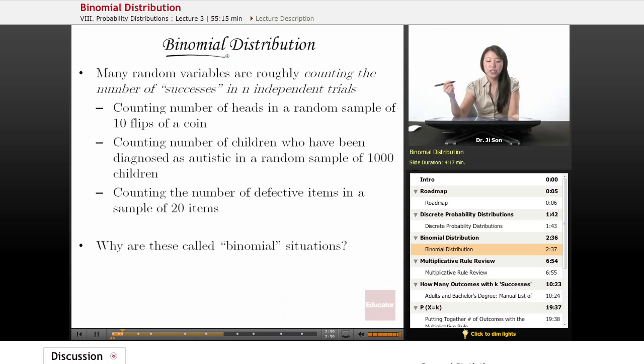Let's talk about this binomial distribution. Many random variables are really counting the number of successes in n independent trials. By successes, we don't necessarily mean that it has to be a winning trial. It just means whatever you're interested in, whatever outcome out of two outcomes you're interested in. A lot of times the random variable is counting how many times that interesting event happens in n number of trials.